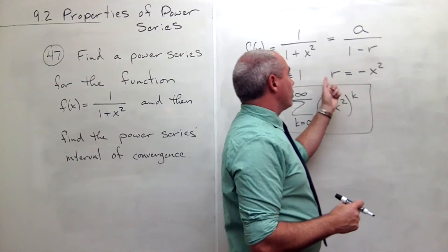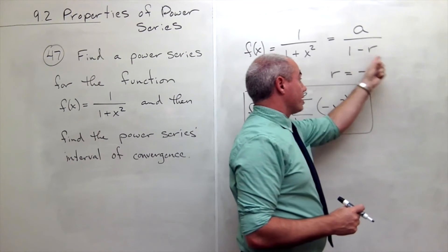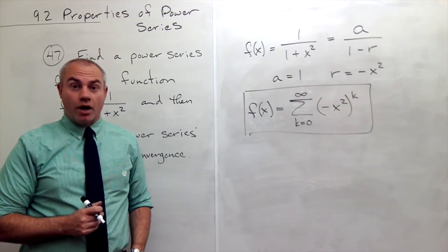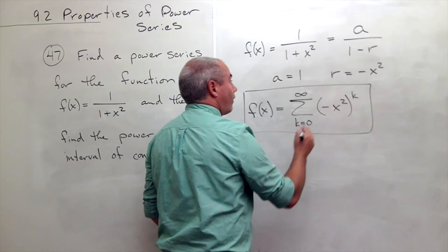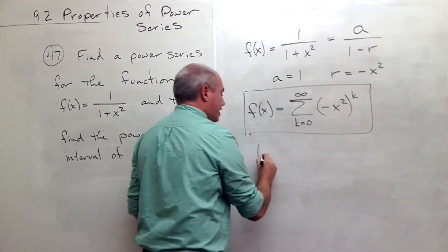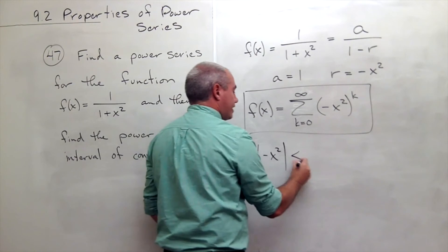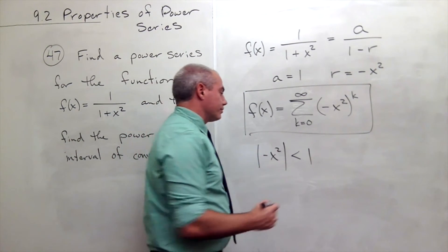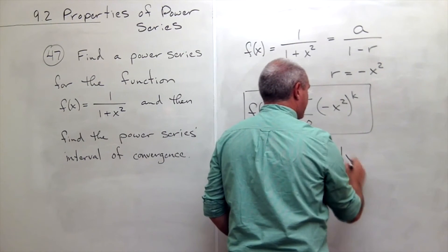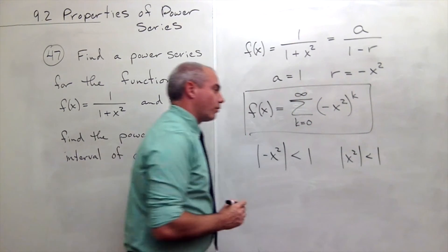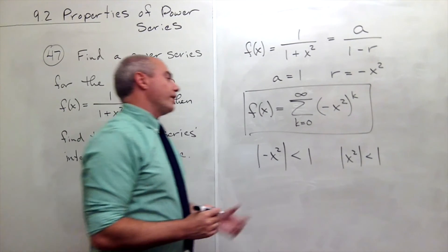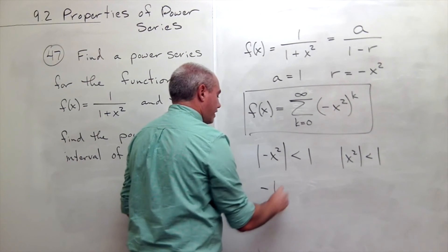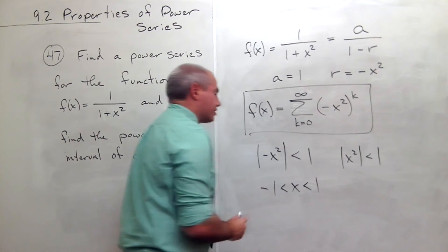Well, I know that geometric series converge if the absolute value of r is less than 1. So the absolute value of r, well r is -x², I want that to be less than 1. Another way of writing |-x²| is just that |x²| needs to be less than 1. And when is |x²| less than 1? It's if -1 < x < 1.